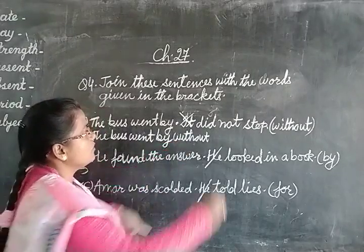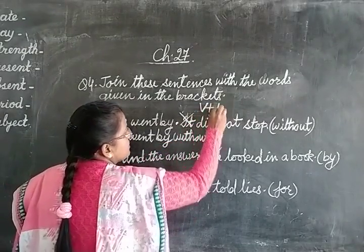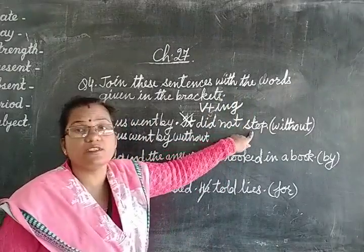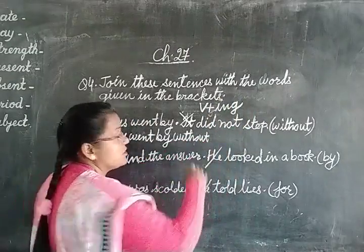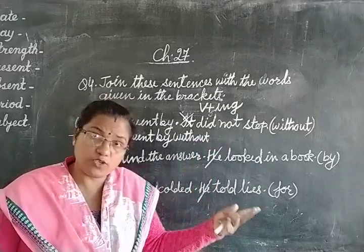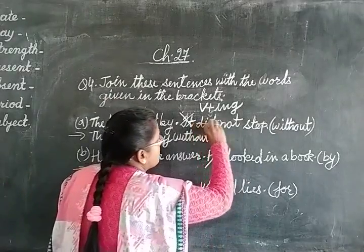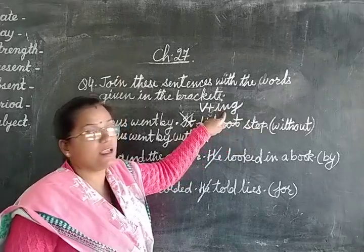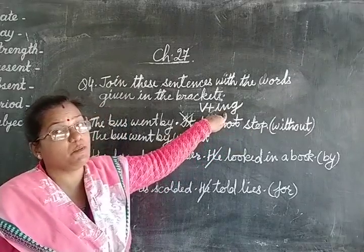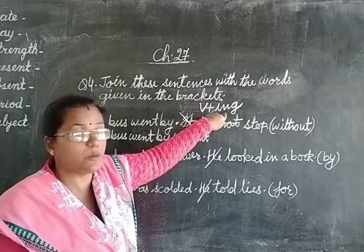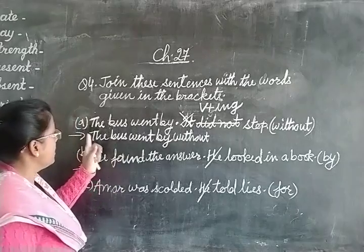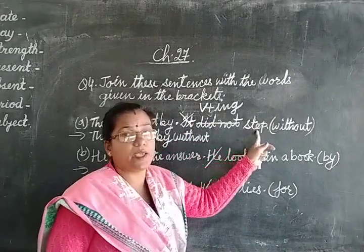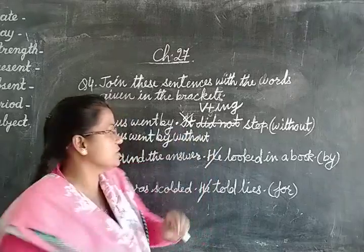Now after 'without,' we use V plus ing form. 'Did not stop' — the key word is 'stop.' Did not stop means 'without stopping.' So we will remove 'did not' and add -ing to the verb: 'stopping.' The ING form of the verb. So our answer will be: 'The bus went by without stopping.'